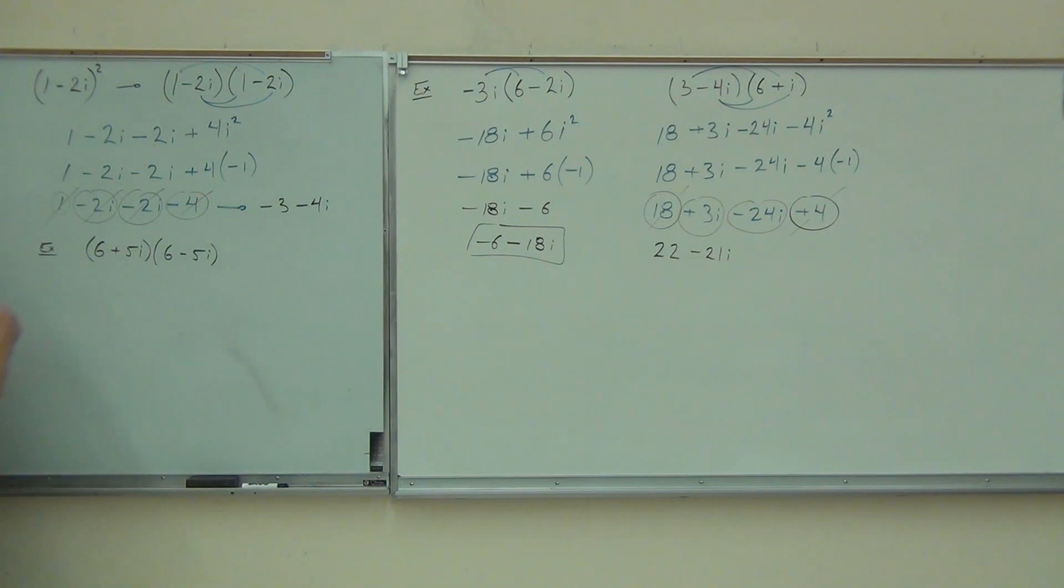So distributing, can you all tell me what's the first thing I'm going to get? 36. Okay, keep going. What's the next thing I'm going to get? Minus 30i. Yeah, that's right. Minus 30. Do you see where we're getting the minus from? Plus 30i. Plus 30i. Great, okay.